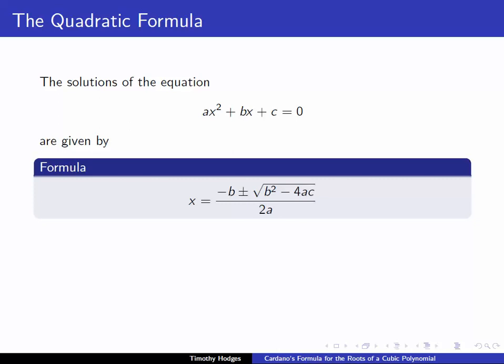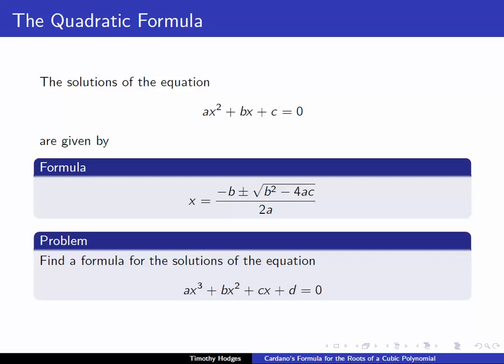The next problem up is to look at cubic equations and ask for a formula of a general cubic equation of the form ax cubed plus bx squared plus cx plus d equals 0. This problem was solved 1,500 years later in the 1500s by a number of Italian mathematicians, of which Cardano now has the fame.